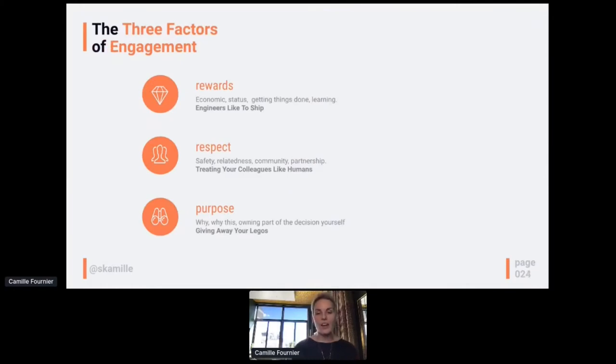To summarize, the three factors of engagement are rewards: economic rewards, status, working on a cool open source project is a nice thing. Employers love that. But more than that, people like to get things done so that they can learn and grow and just feel accomplishment. Engineers like to ship. Never, ever forget that. Respect, safety and relatedness and community and partnership that goes beyond just people that are exactly like you. Never forget that those people that you're communicating with via email or Slack or pull requests, those are humans. It's worth it to slow down and choose your words carefully and be kind if you want to create a healthy and engaged community. And finally, purpose. Why? Why does this thing exist at all? Why am I working on this thing? And now how do I become part of the decision-making process? You've got to give away your Legos, owners. You've got to be willing to let people make decisions that may not be exactly the decision that you would make.